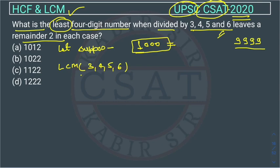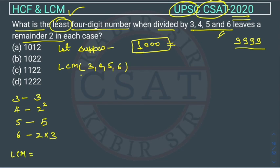We have to find the LCM of 3, 4, 5, and 6. We find the prime factors: factor of 5 is 5; factor of 6 is 2 and 3. In LCM we take the highest power of each prime factor. We take the highest power of 2, highest power of 3, and highest power of 5. So LCM = 2² × 3 × 5 = 60.